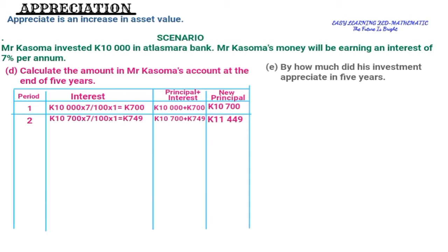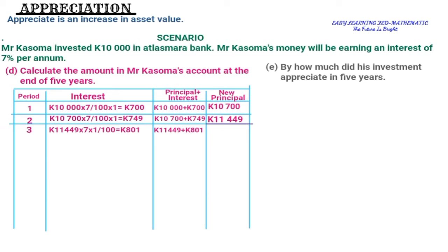Year 3: using the principal of 11,449, multiplied by 7%, multiplied by 1, divided by 100, gives interest of 801 kwacha. Adding: 11,449 + 801 = 12,250. So the new principal for year four is 12,250.